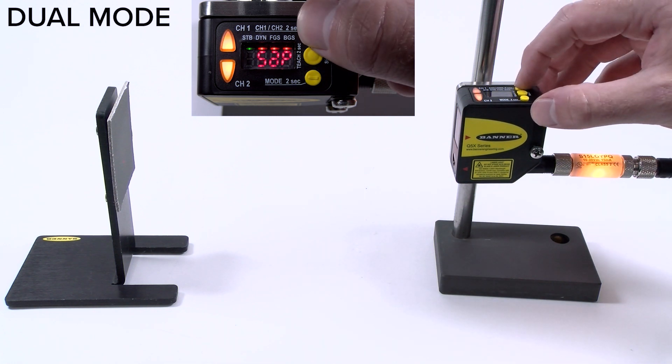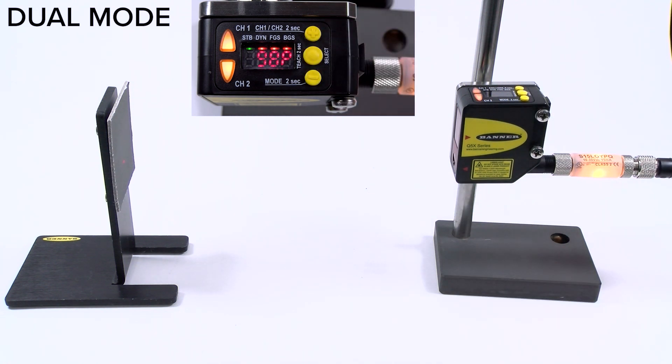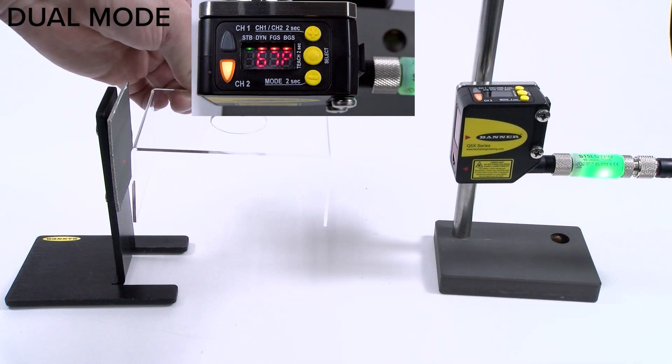Dual mode is best used for clear object detection or contrast sensing. After teaching a static reference point, this mode looks for a change in distance or intensity to detect the target.